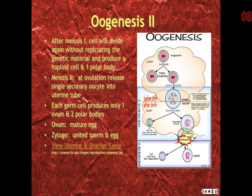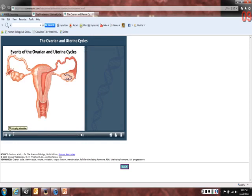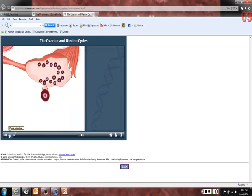The following clip shows the uterine and ovarian cycles. The ovarian cycle lasts about 28 days. The ovaries contain about 200,000 immature eggs called primary oocytes. A primary oocyte is diploid and arrested in prophase one of meiosis. A layer of follicle cells surrounds each primary oocyte; together, an oocyte and its follicle cells make up a follicle.